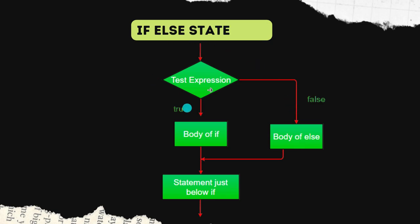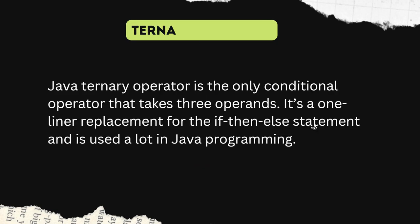We can also understand the last lecture from the flowchart. The test expression true goes to the body of if, false goes to the body of else, and after the if-else block the statement executes and starts. Now in this lecture we will be talking about the Java ternary operator, which is also called the conditional operator, meaning it works with three operands.